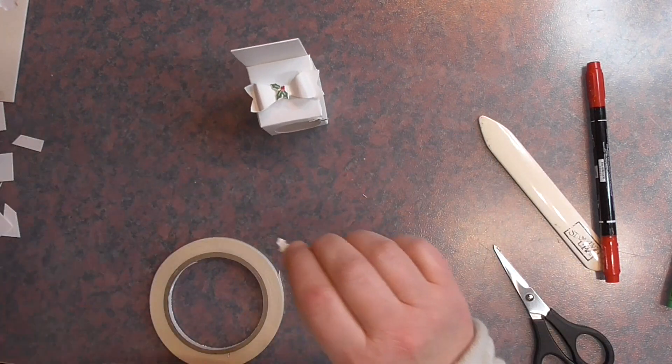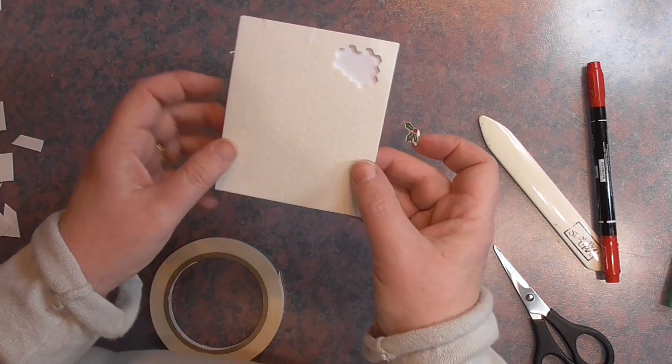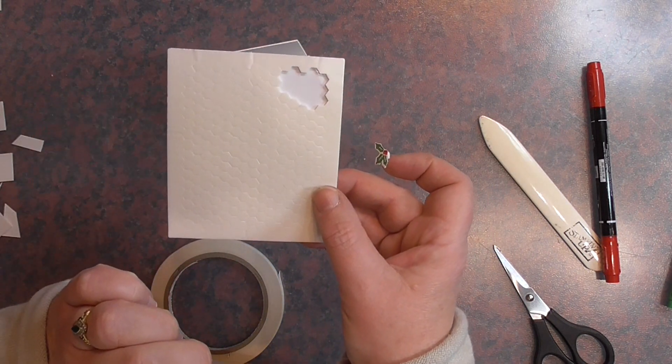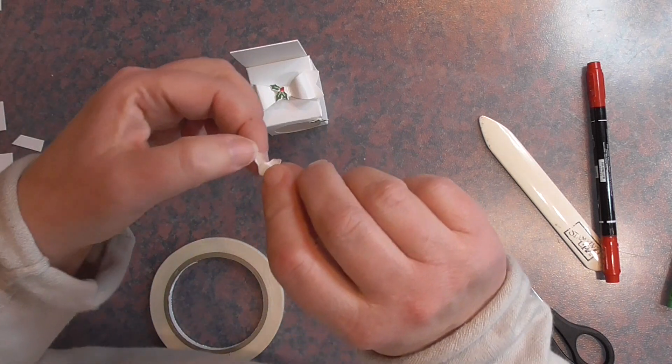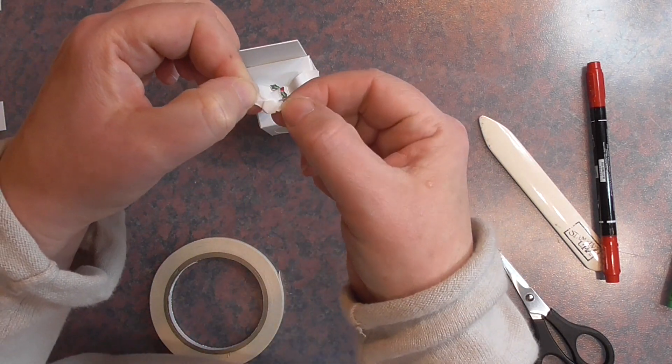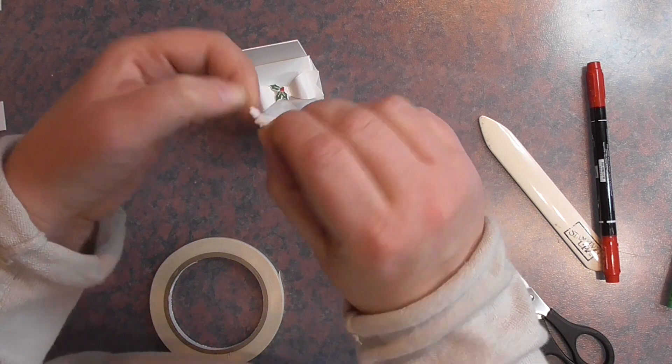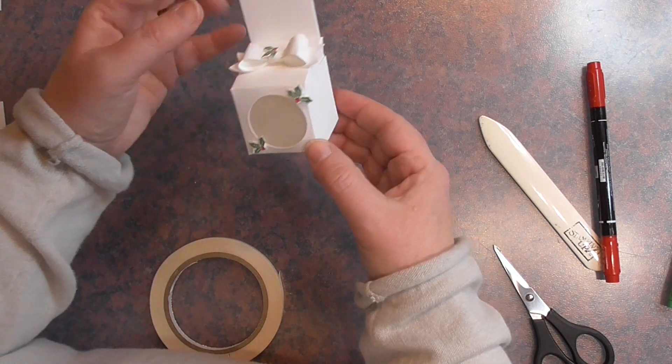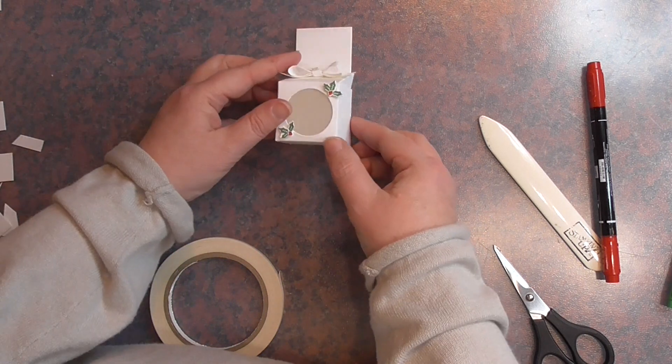And these I'm putting on with the mini stamping dimensionals, which are great because they're just, they're exactly what it says on the tin. They're mini and they just fit on to the back of these dinky little pieces like this without showing. And if we have one here as well. Then our box is almost finished.